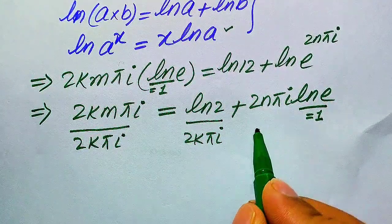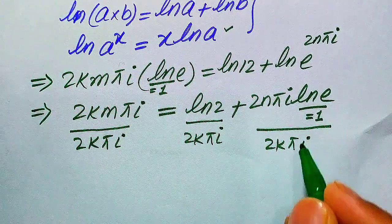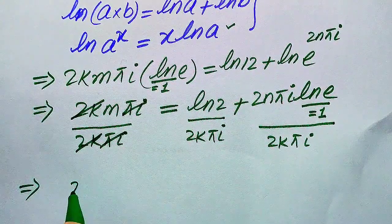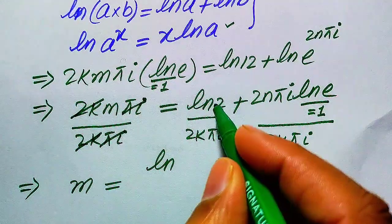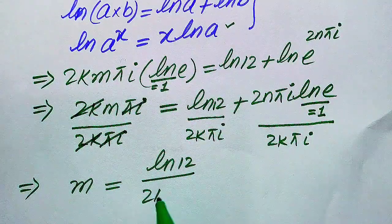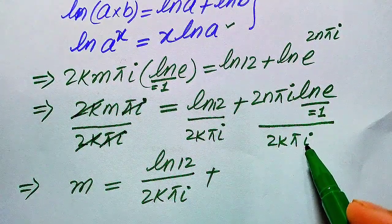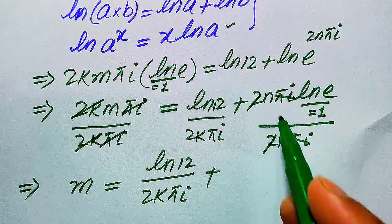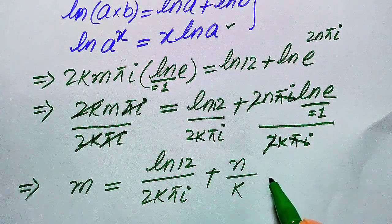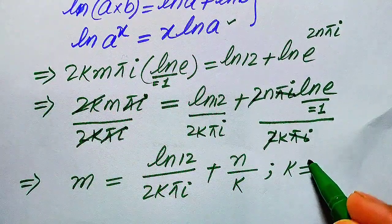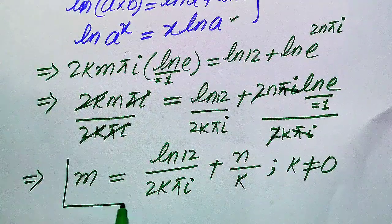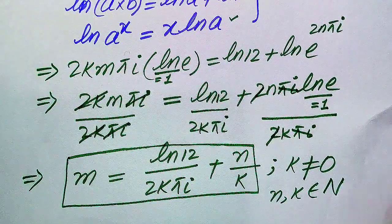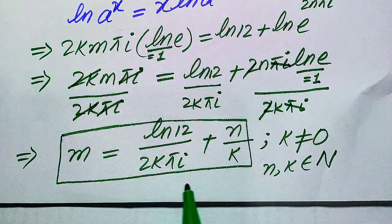Each term is divided by 2k·π·i. On the left side, 2k·π·i cancels out, giving m. On the right side, we get log 12 divided by 2k·π·i, plus n over k, since the 2, π, and i cancel. So our final answer is m = log(12) / (2k·π·i) + n/k, where n and k are natural numbers and k ≠ 0.